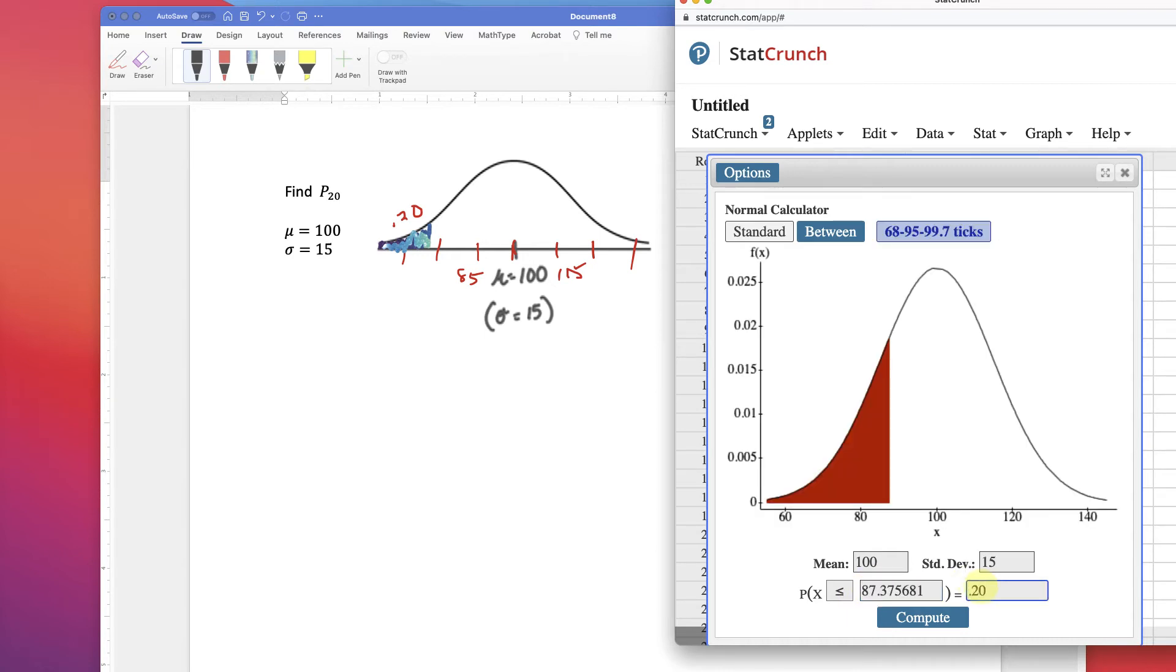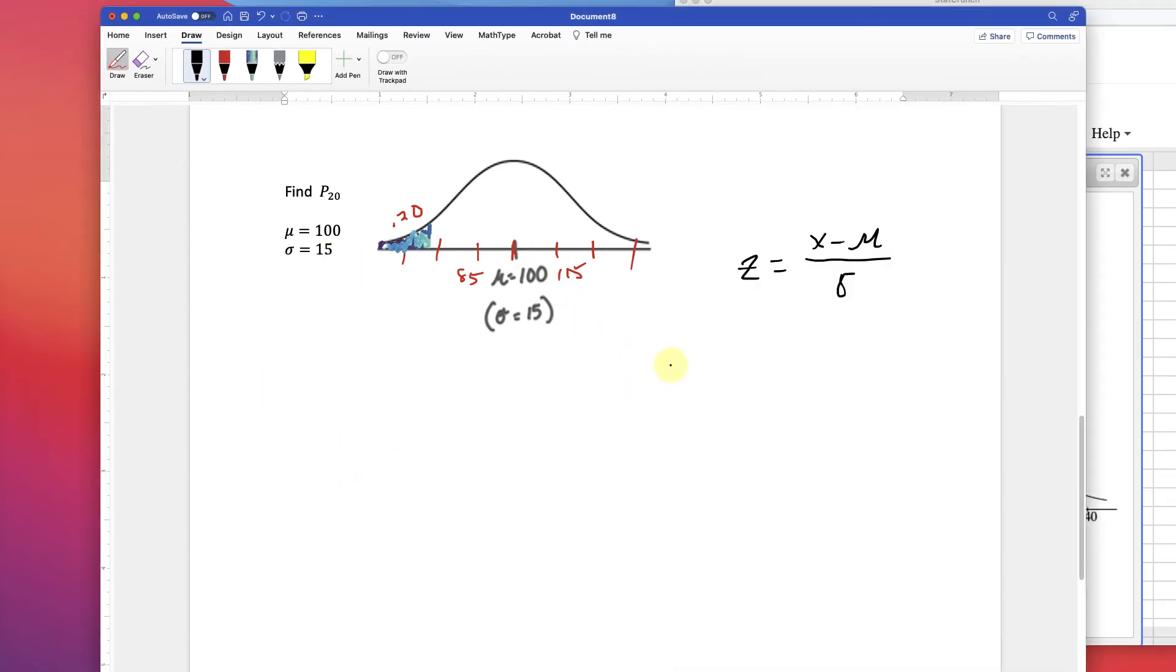Here we have 87.38. That's the x value where you would have a 20% probability.